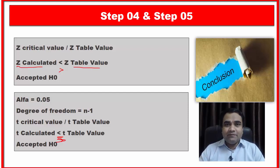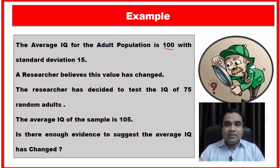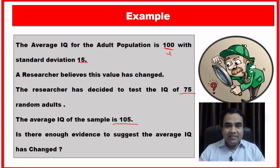Now we will take a numerical example to understand all these steps. The average IQ for the adult population is 100 with a standard deviation of 15. A researcher believes this value has changed. The researcher has decided to test the IQ of 75 random adults, and the average IQ of the sample is 105. So we have: population mean mu equals 100, population standard deviation sigma equals 15, sample size n equals 75, and sample mean x-bar equals 105.